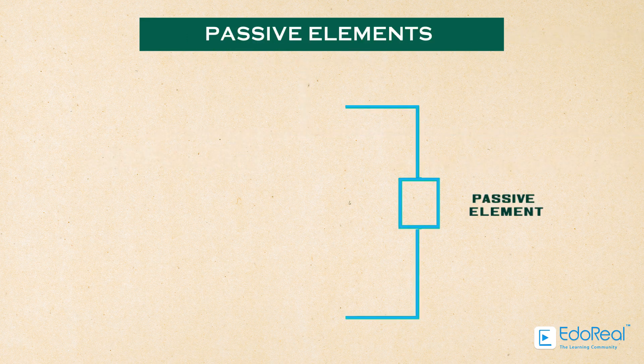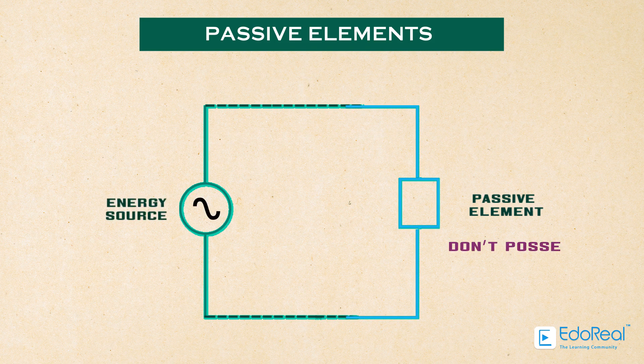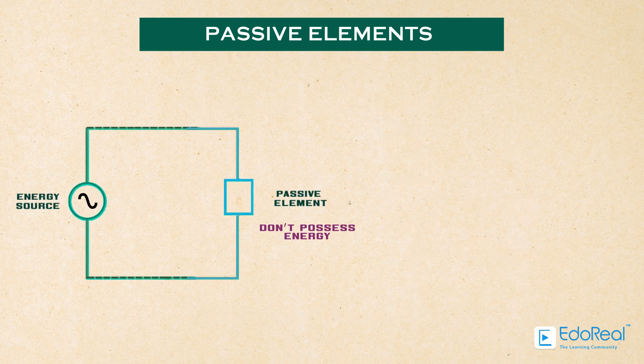The passive elements of an electric circuit do not possess energy of their own. They receive energy from the sources. Examples of passive elements are resistor, inductor, and capacitor.